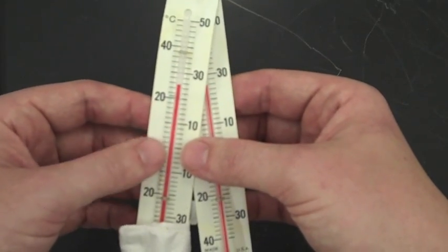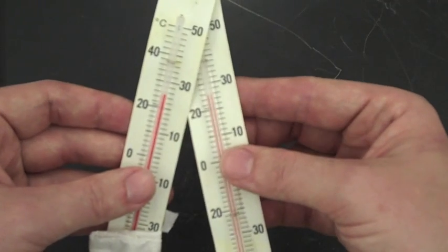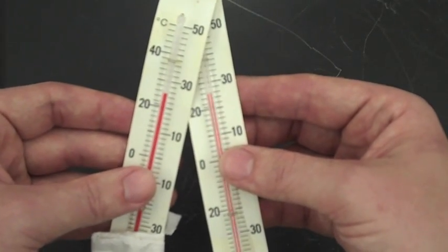We want to figure out how much moisture is in the atmosphere and how much evaporation is going to take place. You can see that both thermometers are about 25 degrees Celsius.